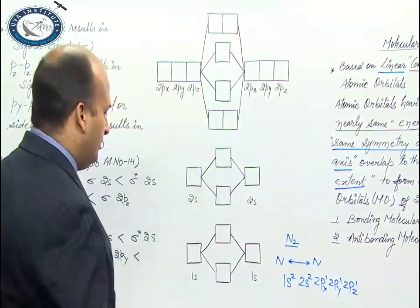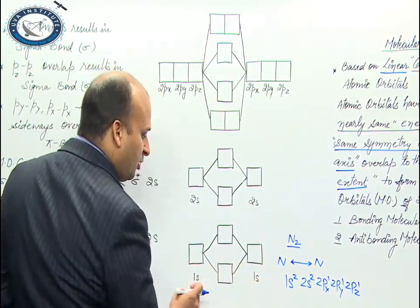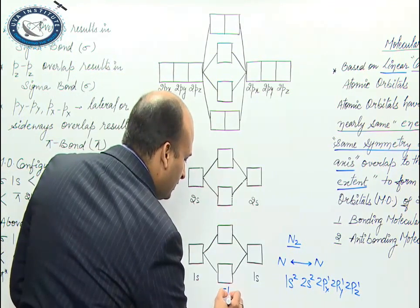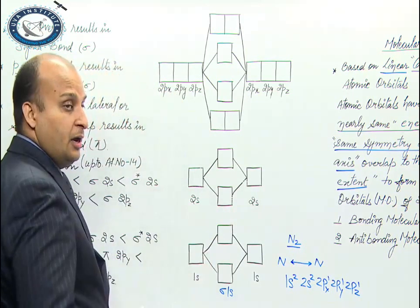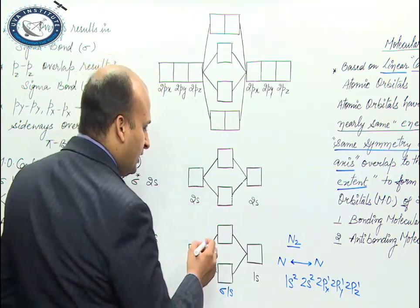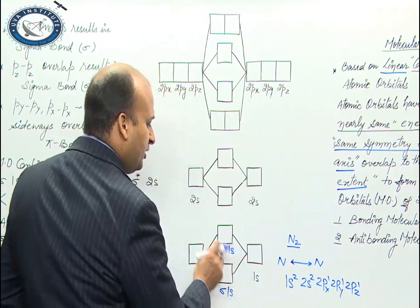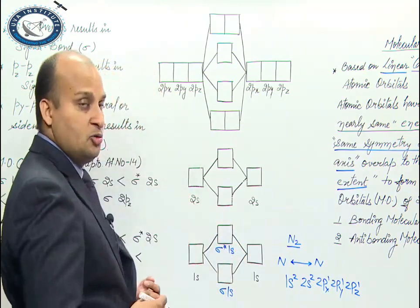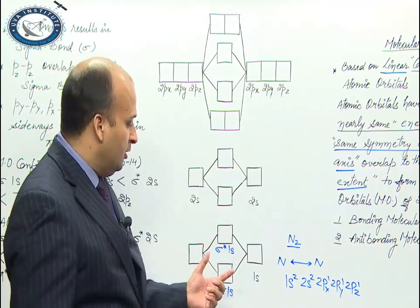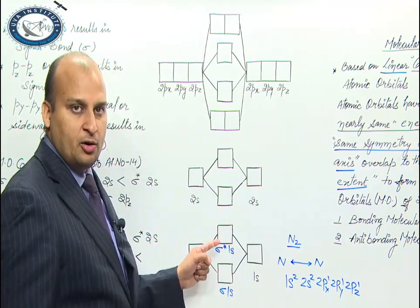Here is 1s from one atom and 1s from the other. S–S orbital overlap gives sigma 1s (bonding), and anti-bonding is shown with a star. So 2 atomic orbitals combine to give 2 molecular orbitals.